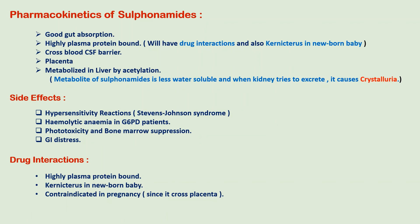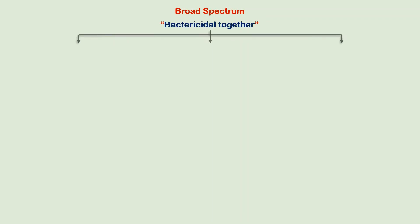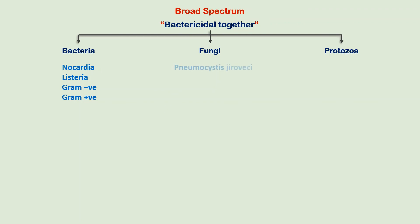In newborn babies, sulfonamides can cause kernicterus by displacing bilirubin from plasma protein binding. They cross the placenta and are therefore contraindicated in pregnancy. Regarding spectrum of activity, they have a broad spectrum and are bacteriostatic alone but bactericidal in combination. They act on bacteria, fungi, and protozoa. The bacteria they act upon include Nocardia, Listeria, and a list of gram-negative and gram-positive organisms.